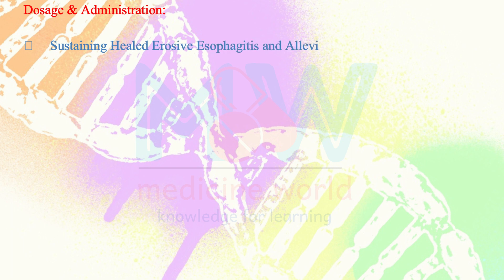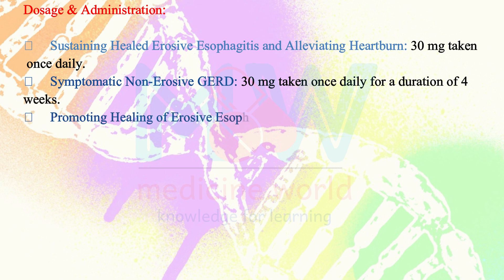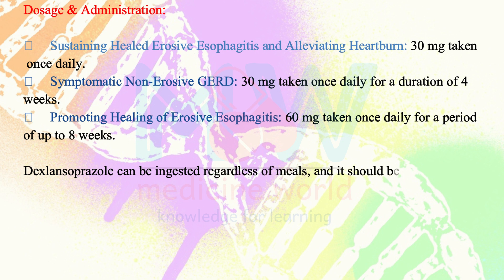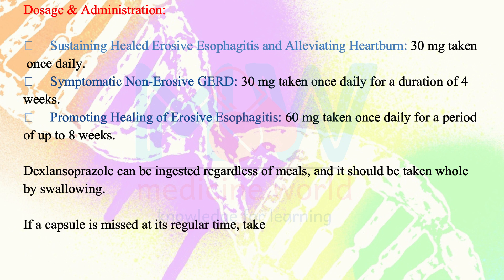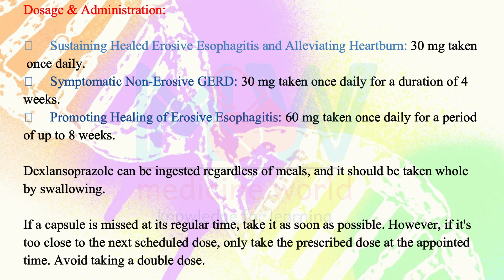Dosage and administration: for sustaining healed erosive esophagitis and alleviating heartburn, 30 mg taken once daily; for symptomatic non-erosive GERD, 30 mg taken once daily for a duration of four weeks; for promoting healing of erosive esophagitis, 60 mg taken once daily for a period of up to eight weeks. Dexlansoprazole can be ingested regardless of meals and should be swallowed whole. If a dose is missed, take it as soon as possible; however, if it is too close to the next scheduled dose, only take the prescribed dose at the appointed time and avoid taking a double dose.